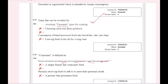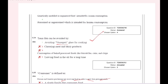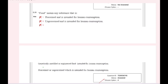Food which is intended for human consumption — processed and intended for human consumption, unprocessed and unprocessed, genetically modified, processed and unprocessed. Two options are correct.